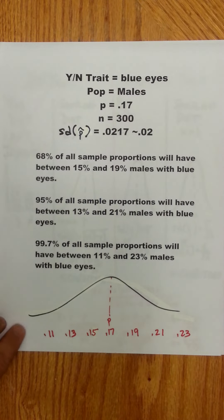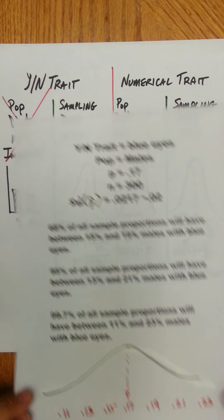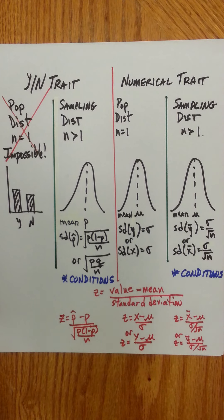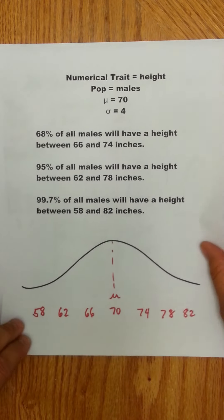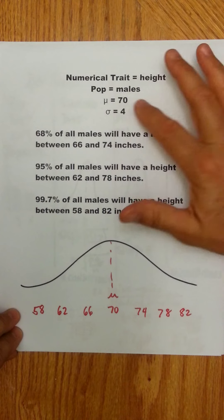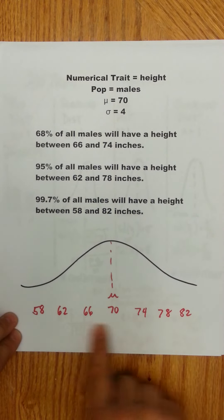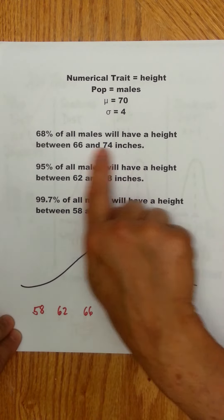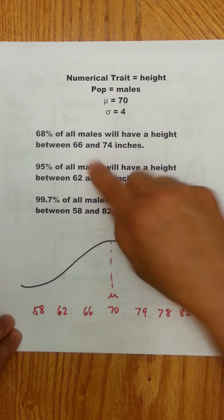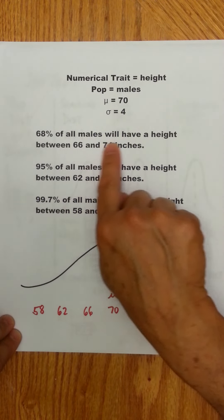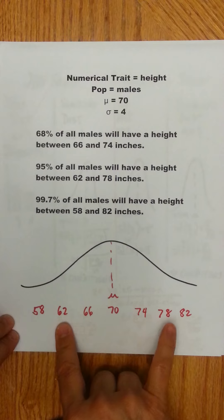For a yes-no trait, these are the only interpretations that are possible. For a numerical trait, you could have either n equal 1 or n greater than 1. If n is 1, suppose we take the numerical trait height, population is males, and the average height of all males is 70 with standard deviation 4. Here's your population distribution: 68% of all males — not samples, because we're just taking males one at a time and taking their height — will have a height between 66 and 74 inches, and 95% of all males will have a height between 62 and 78.